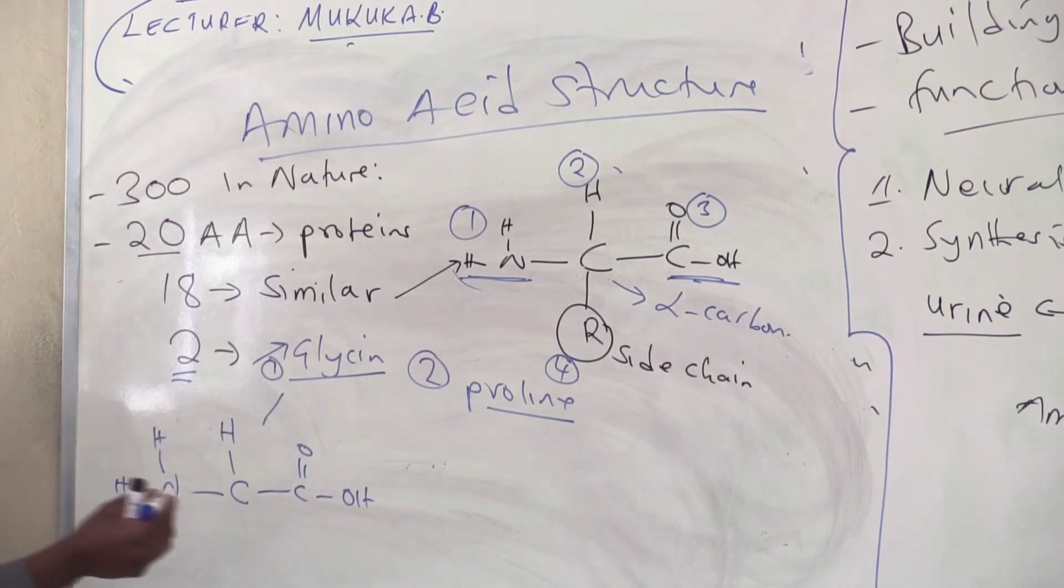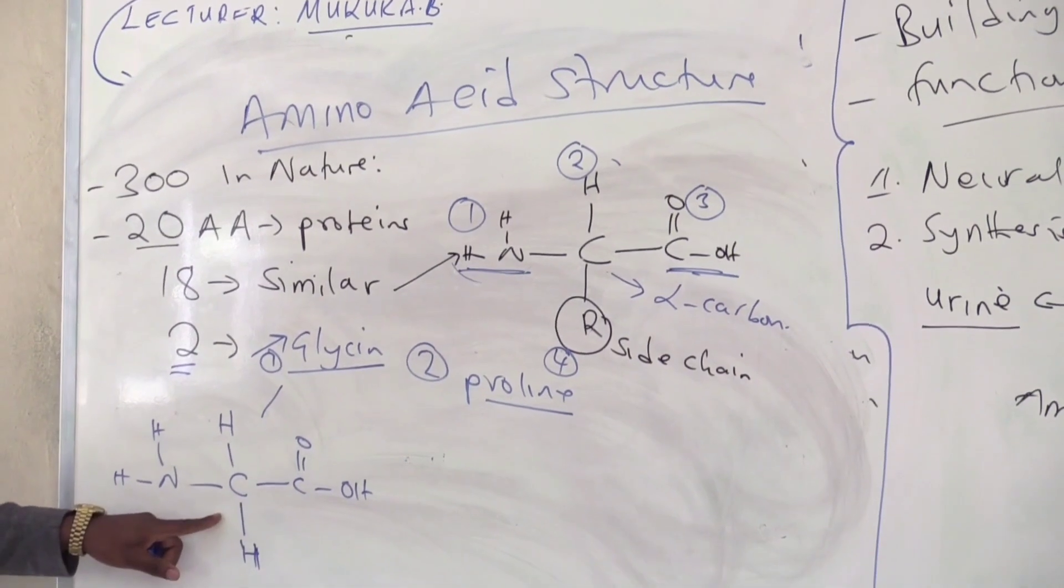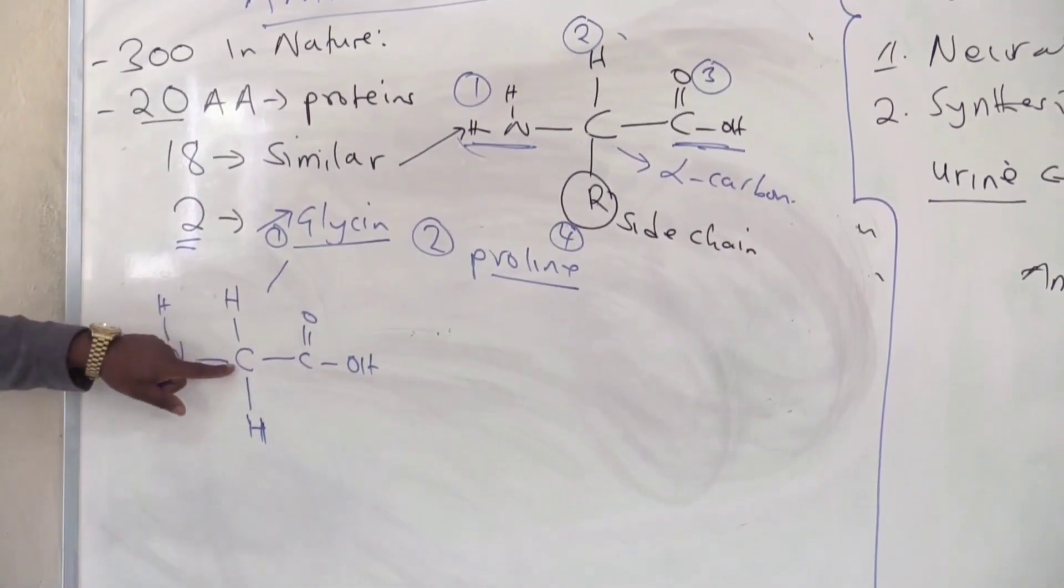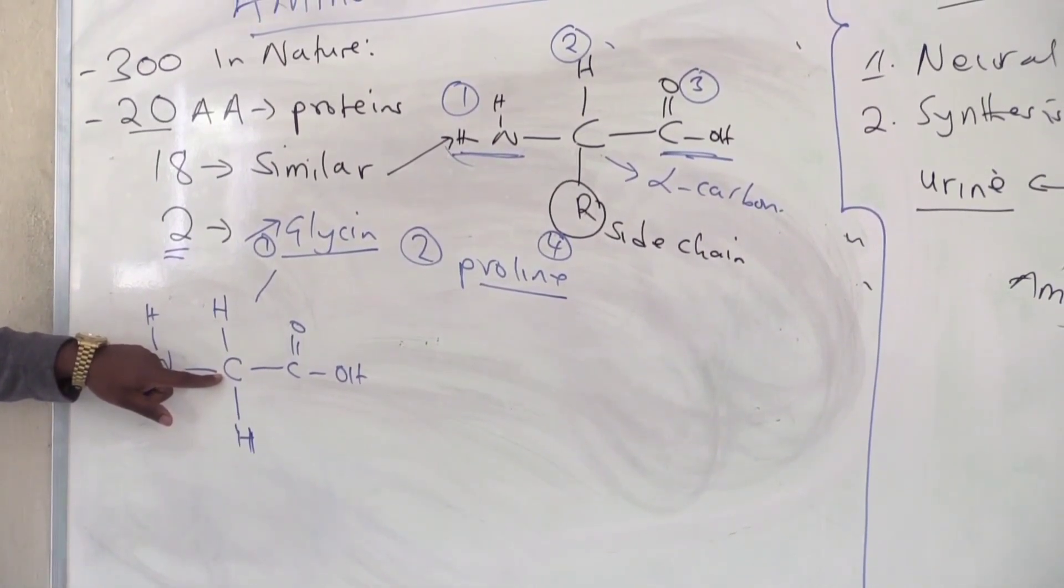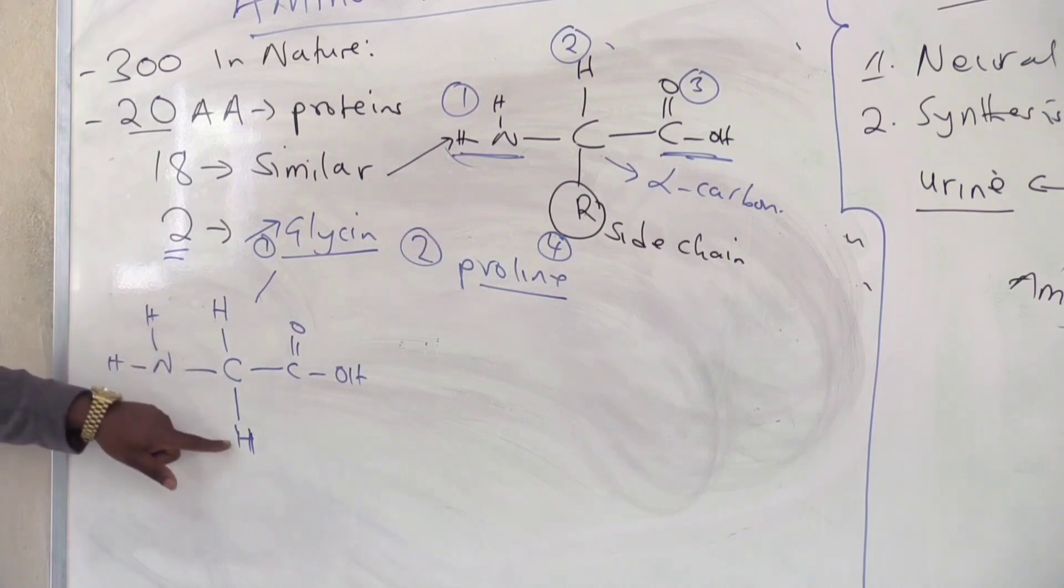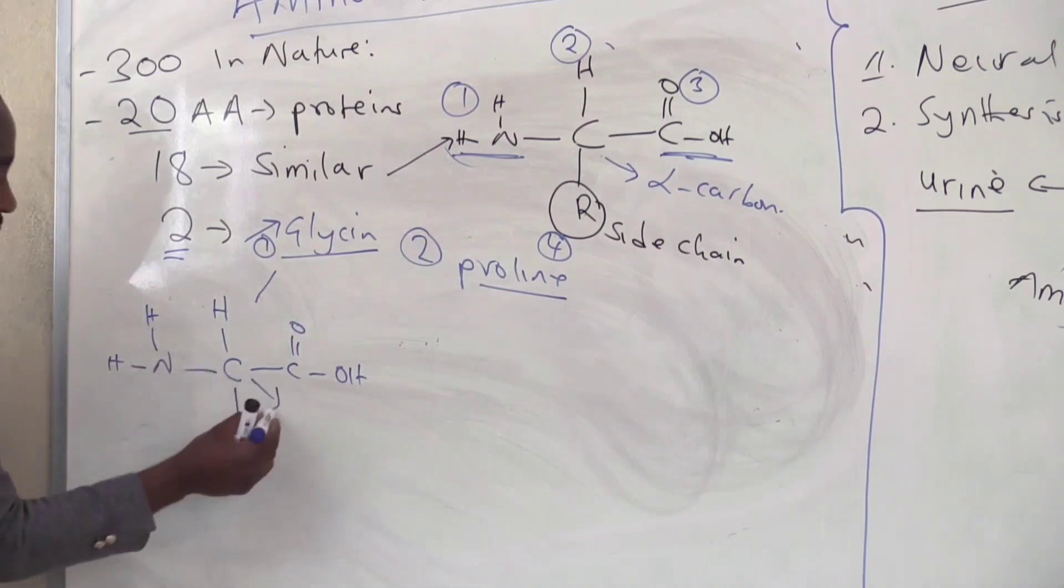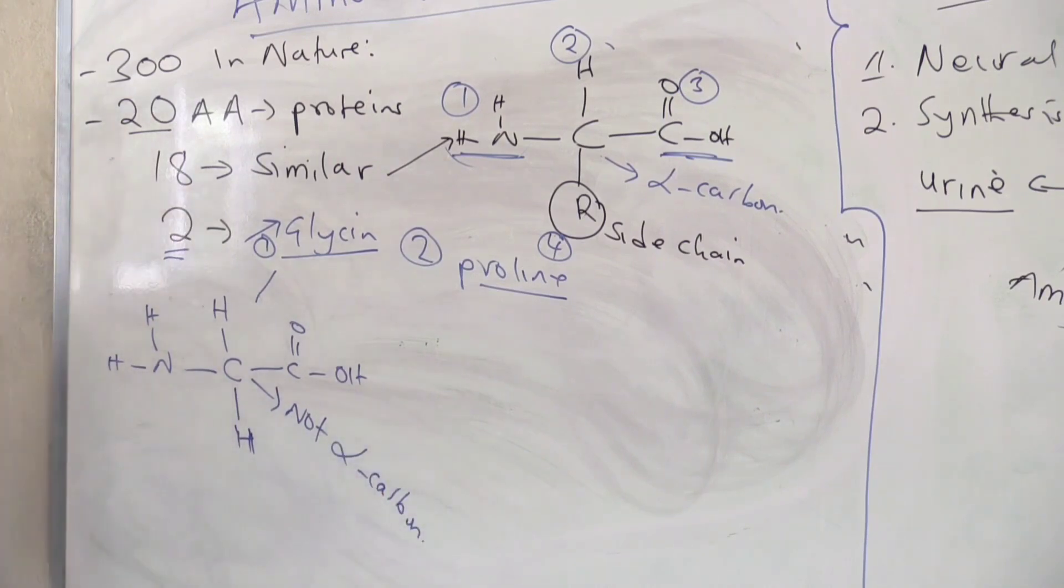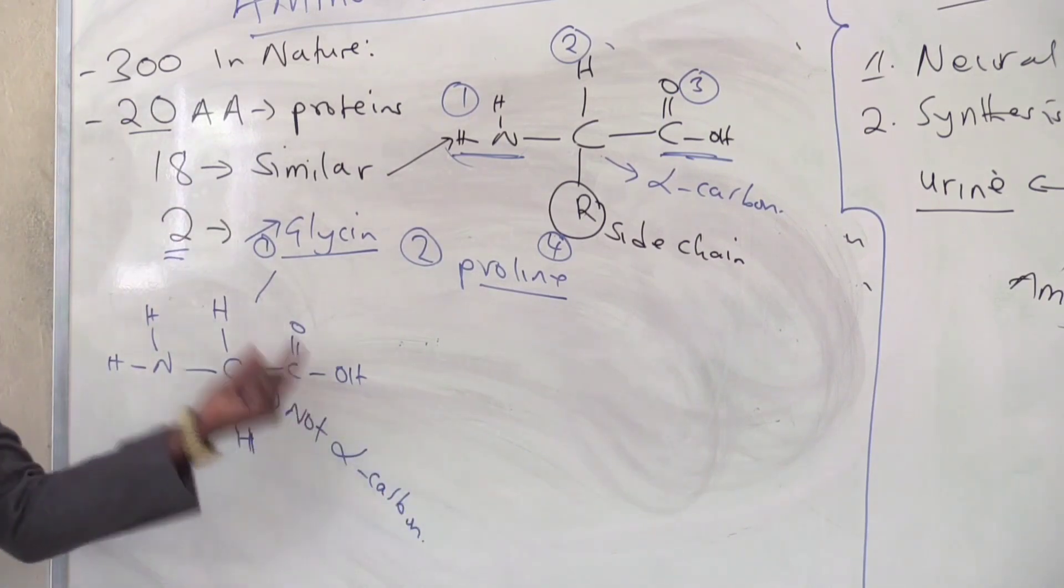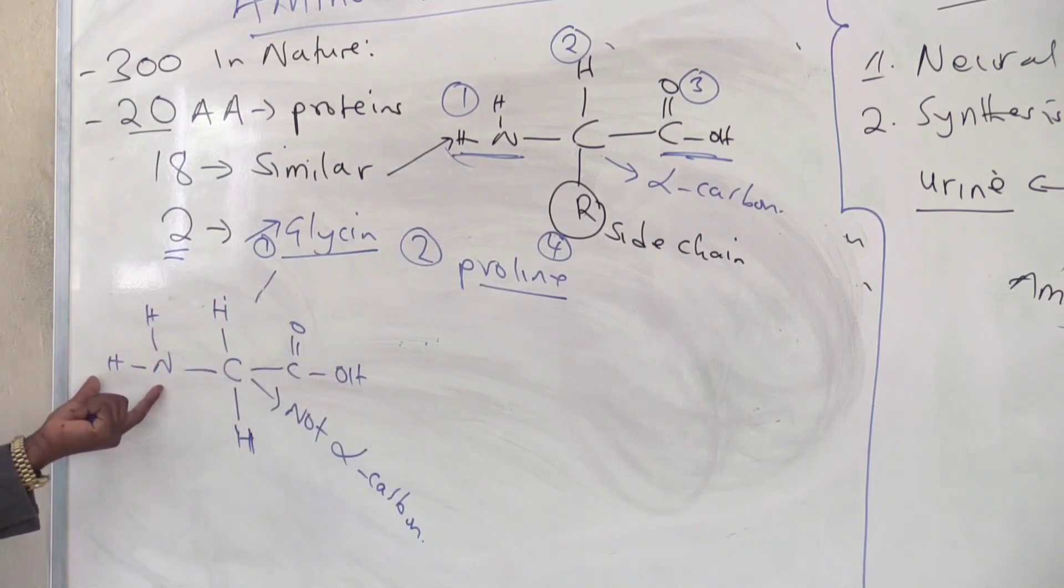But how does this glycine differ from the other 18 amino acids? It differs from the others because in the other group it contains H. Because it has H in the other group, it means that the four things attached to carbon at the center, they are not different. You can see that this hydrogen is similar to that hydrogen, so this carbon is not alpha carbon. It doesn't have an alpha carbon. It has carboxyl, hydrogen, and amino group, but the carbon at the center is not alpha because there are two hydrogen atoms.